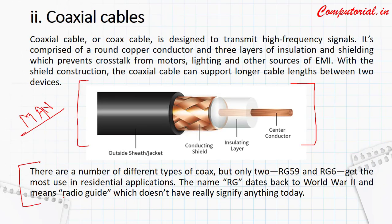Coaxial cable is also available in different categories. These can be RG59 and RG6. RG stands for radio guide — this term was made in World War II and it has no specific meaning now.